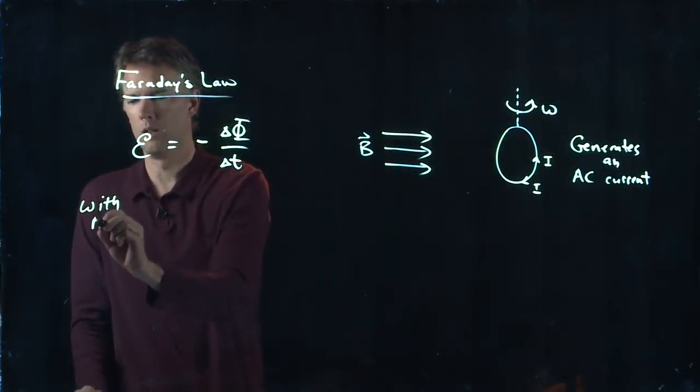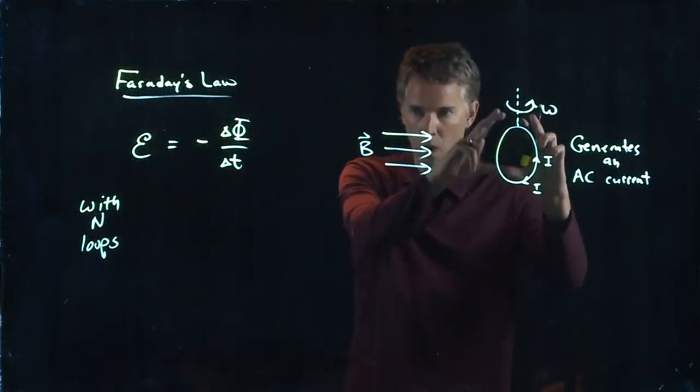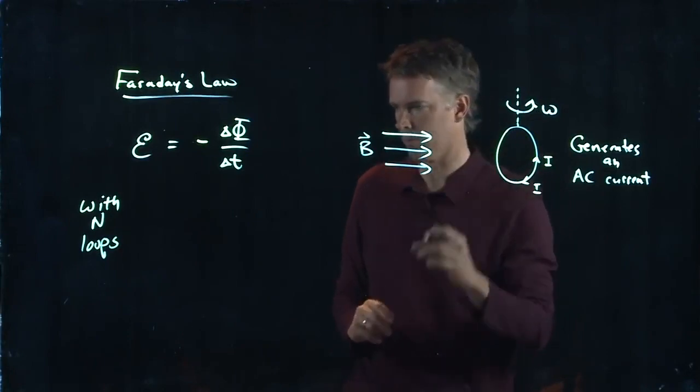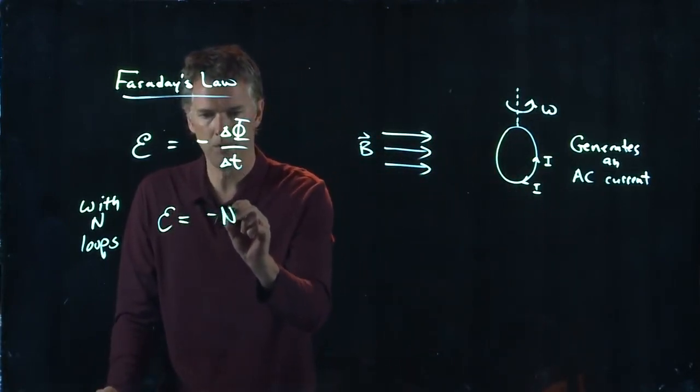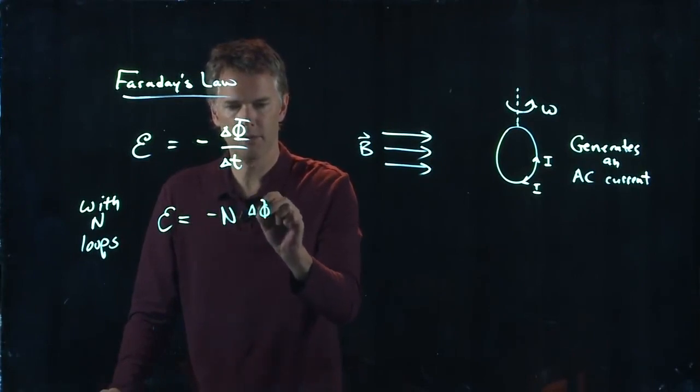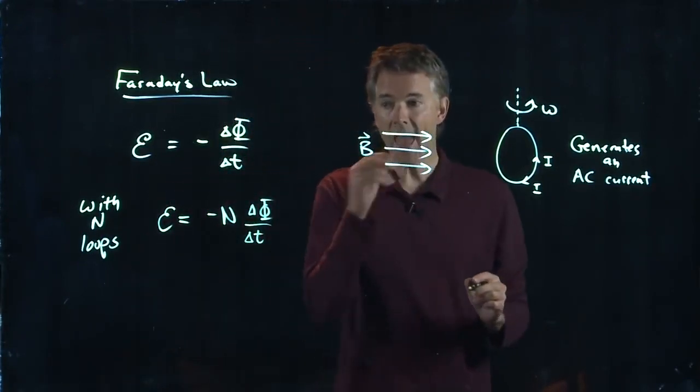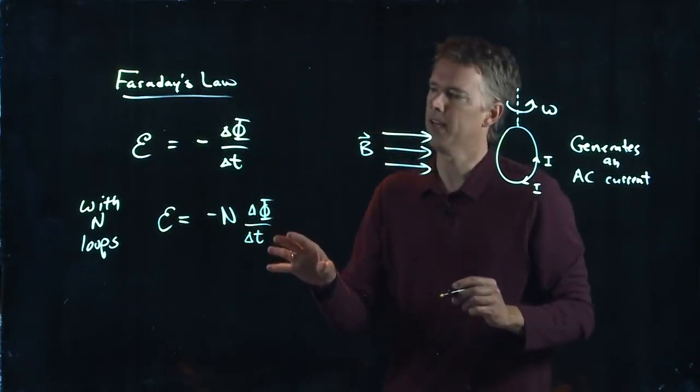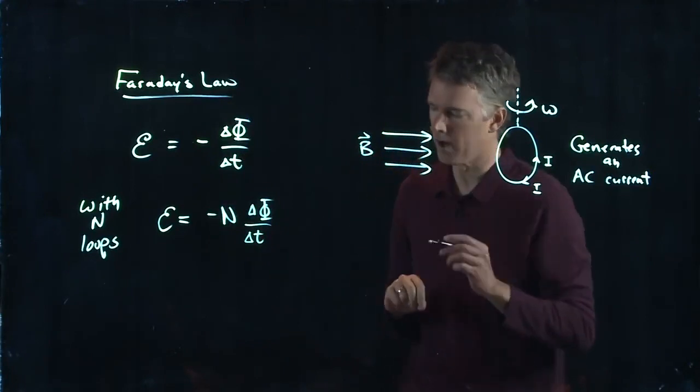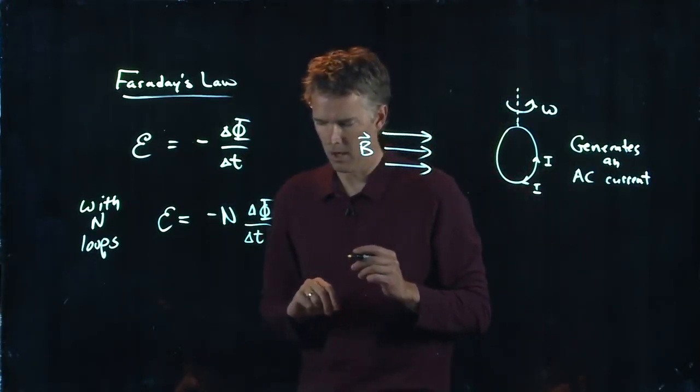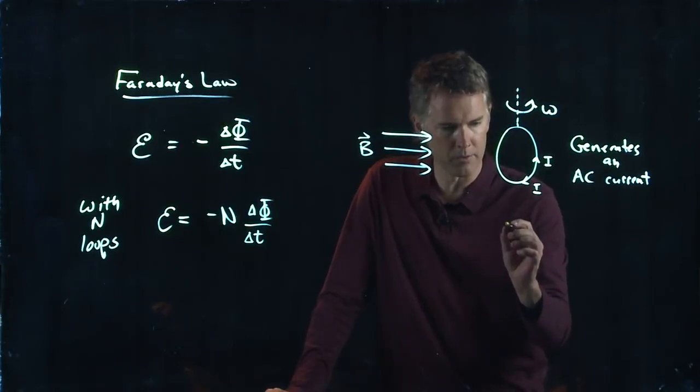I don't want just one coil, I want a whole bunch of coils. In that case, we just add up the EMF, which is kind of like adding up voltages. You throw an N in there to tell you that you're gonna get N times the EMF that you would have with just one coil.